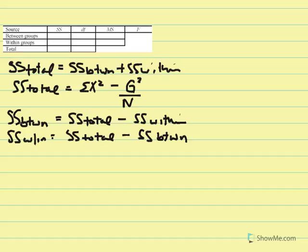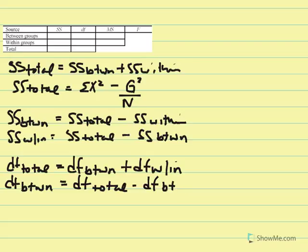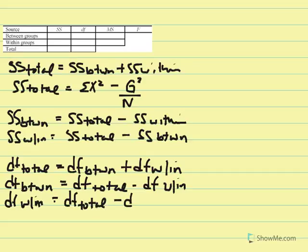The degrees of freedom are also related. DF total equals DF between plus DF within. DF between equals DF total minus DF within. DF within equals DF total minus DF between. Using this table will really help you in solving for these different statistics and understanding the relationship between them.